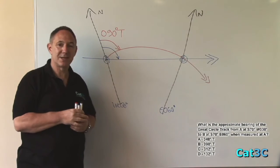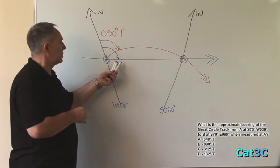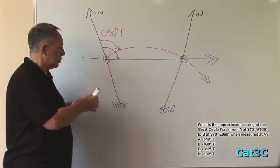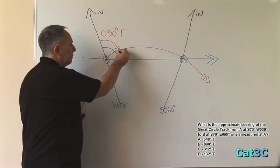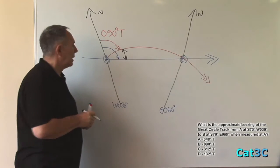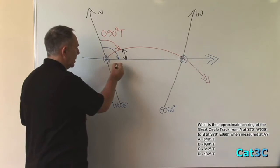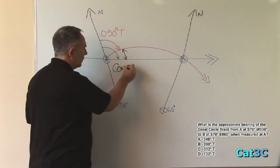From this, we can see that the Great Circle track at A is greater than the rhumb line track at A by that angle. And that angle is known as conversion angle.